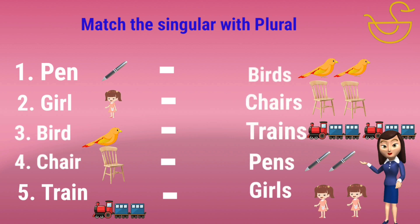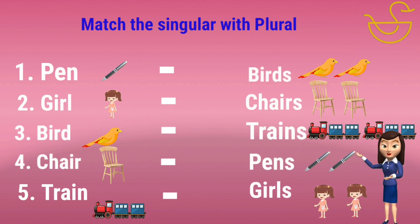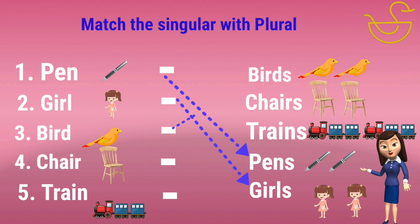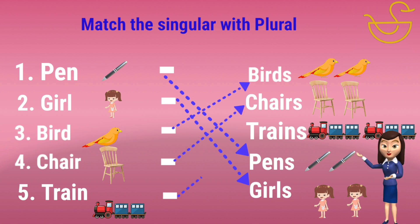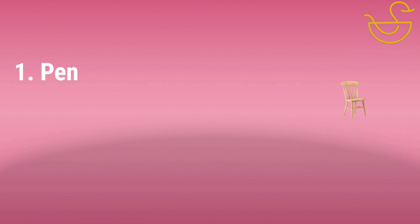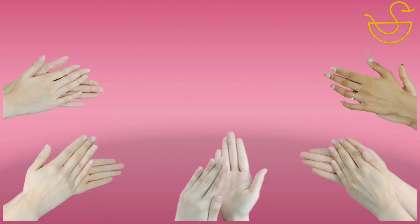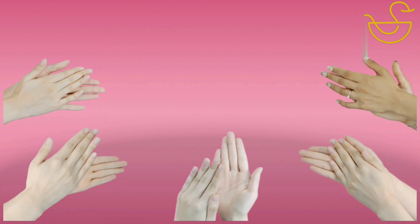Let's do this activity. If you want, you can pause and match the singular with the plural nouns. Pen — Pens. Girl — Girls. Board — Boards. Chair — Chairs. Train — Trains.